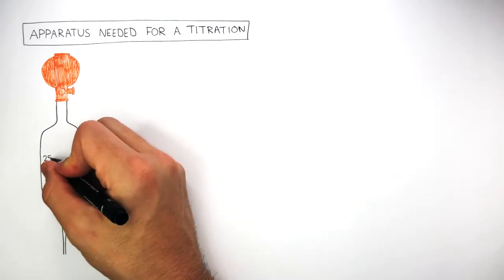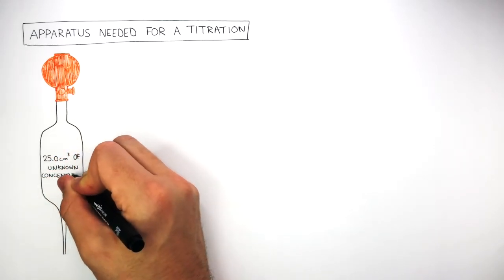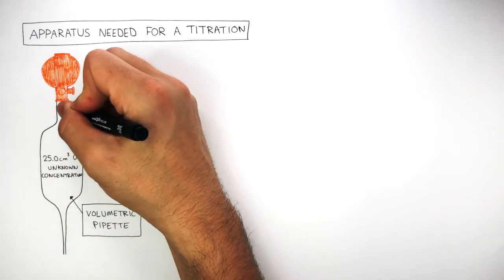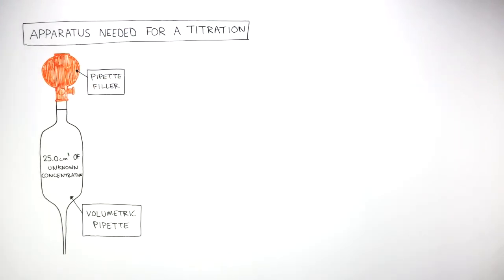For example, 25.0 centimetres cubed of the unknown concentration up to this line here. And the pipette filler is what provides the suction for the unknown concentration to go into the volumetric pipette.